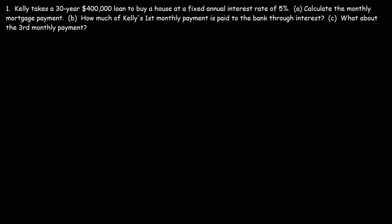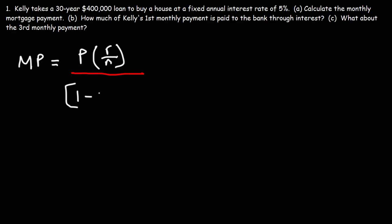There's a formula we can use to get this answer. The monthly mortgage payment, we'll call it MP, is equal to the principal times the annual interest rate R divided by N. N is the number of payments made in a year. Since we're trying to calculate the monthly payment and there are 12 months in a year, N is going to be 12. All of this is divided by 1 minus (1 plus R over N) raised to the negative NT.